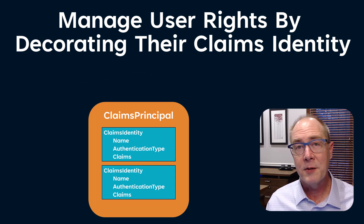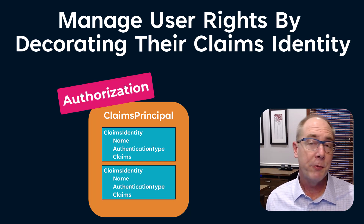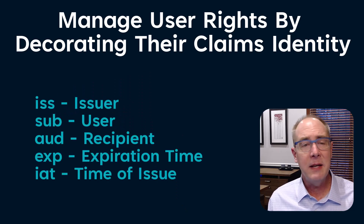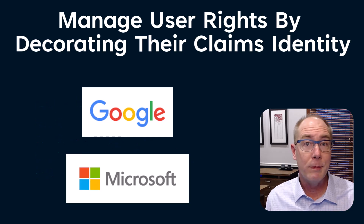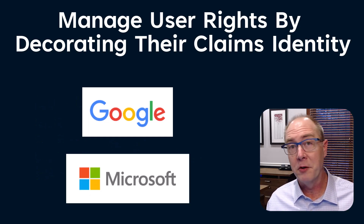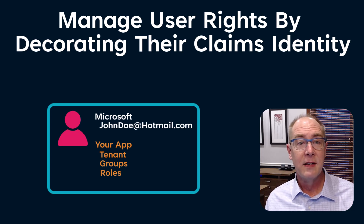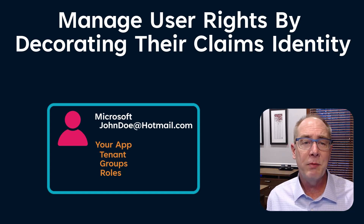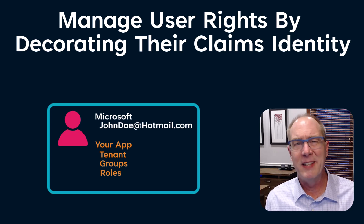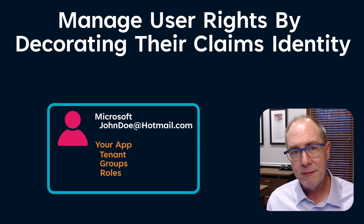Claims-based authorization in .NET is a hidden gem, but the reality is you don't really get a lot of useful claims from an external identity provider like Google or Microsoft. Google doesn't know anything about your user or their security rights or your tenants, and most of us manage security with roles and groups, not by individual user. So where's that information going to come from?